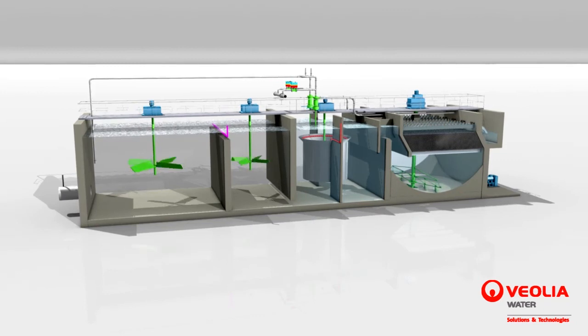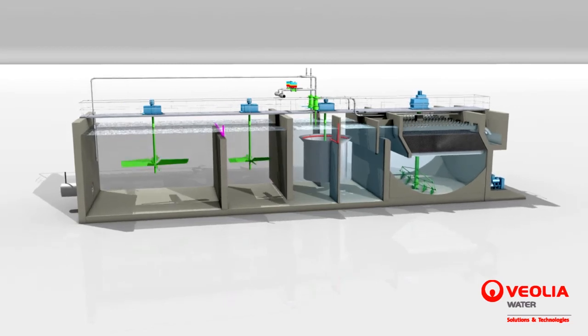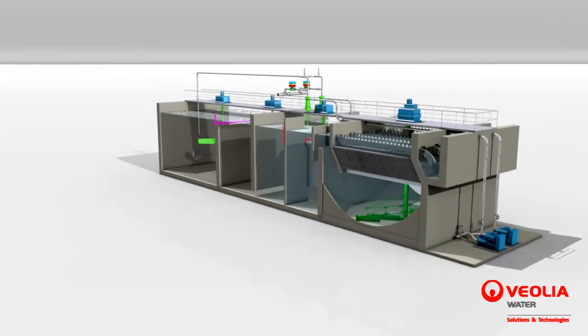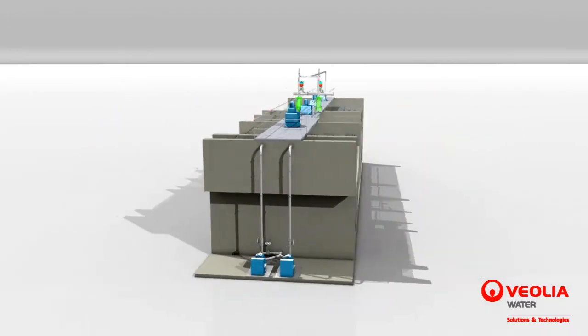Actiflow Carb is equipped with a contact tank that utilizes powdered activated carbon for the adsorption of non-flocculable organic matter, taste and odor compounds, pesticides, and emerging micropollutants.